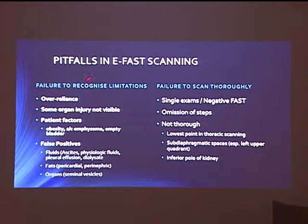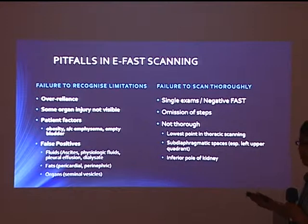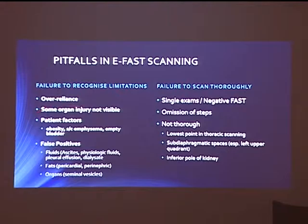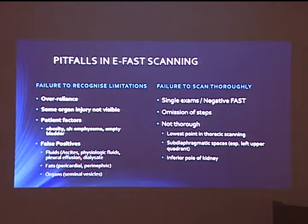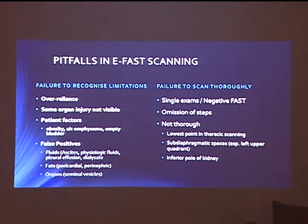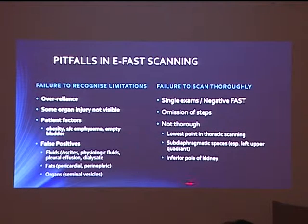What are the problems with eFAST scanning? Number one — over-reliance: don't have too much faith in a positive or negative result and argue with the surgeon that no CT is needed. Organ injuries are not visible, because FAST looks for fluid, not organ injury. Patients can give you false positives — for example, a patient with chronic renal failure presenting with trauma makes interpretation difficult. Fats and other organs can also cause problems. When you have a negative FAST in trauma, always repeat it when you have the chance, because the first may be negative but the next may be positive. And remember: omission of steps — do all areas and look for all the signs described. These are the things to remember when doing eFAST. Thank you.